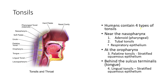Humans contain four types of tonsils. Near the nasopharynx, we have the adenoid or pharyngeal tonsils, and we also have the tubal tonsils. The adenoid or pharyngeal tonsils as well as the tubal tonsils are going to be made up of respiratory epithelium.